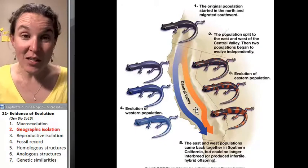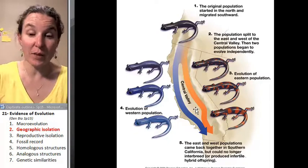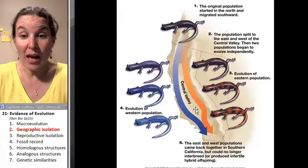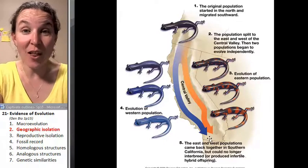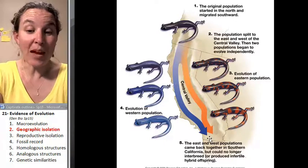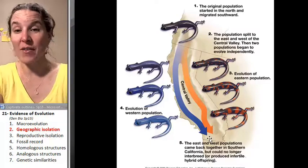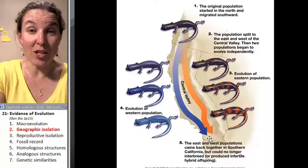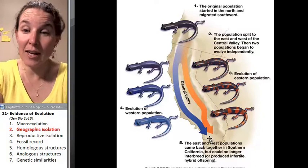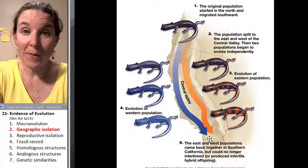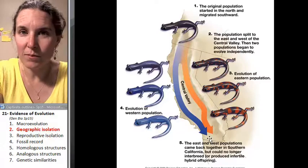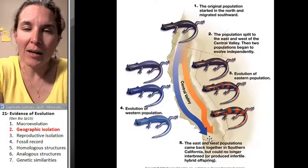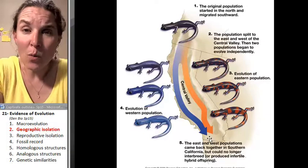Ultimately, these two populations continued to migrate south, and eventually they came back together in Southern California. They actually migrated so far down that they passed through the Central Valley, and now they can hang out with each other again. But guess what? Could they make babies? No. They might have wanted to, they might have even tried, but it didn't work.